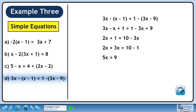Simplify to 5x equals 9. Divide both sides by 5 to isolate x. 9 over 5 can't be reduced further, so our final answer is x equals 9 over 5.